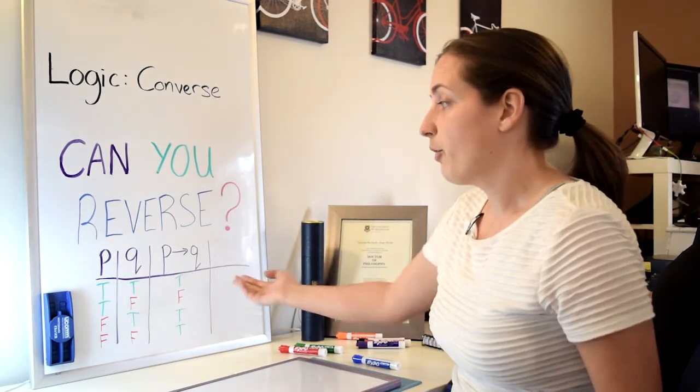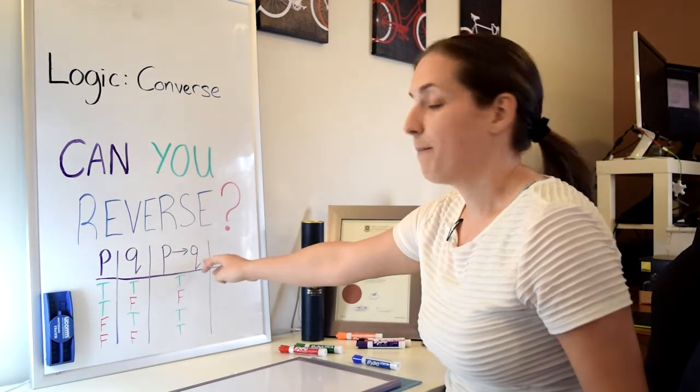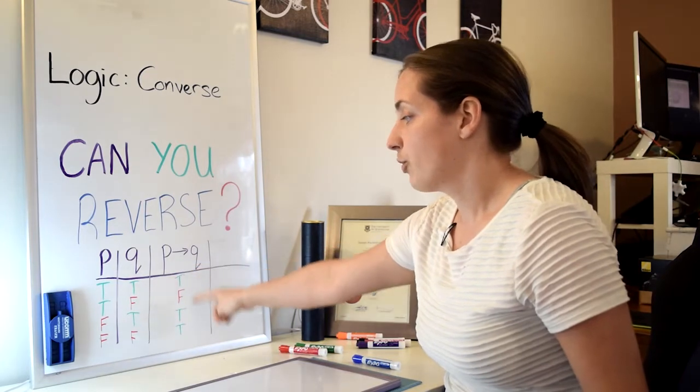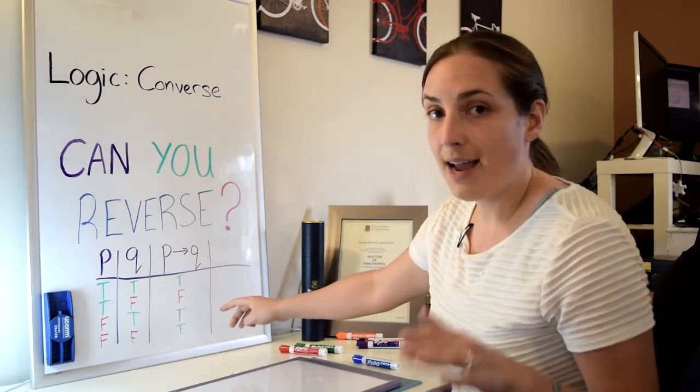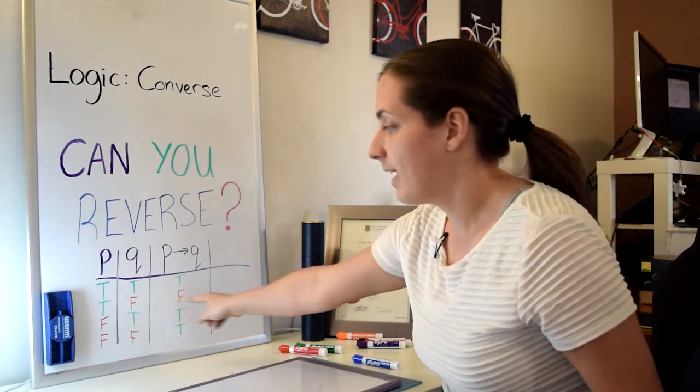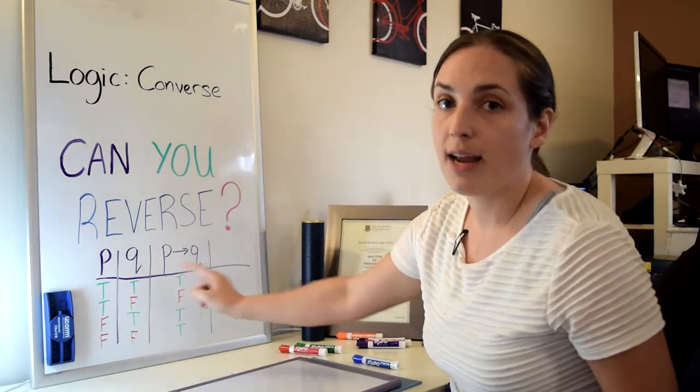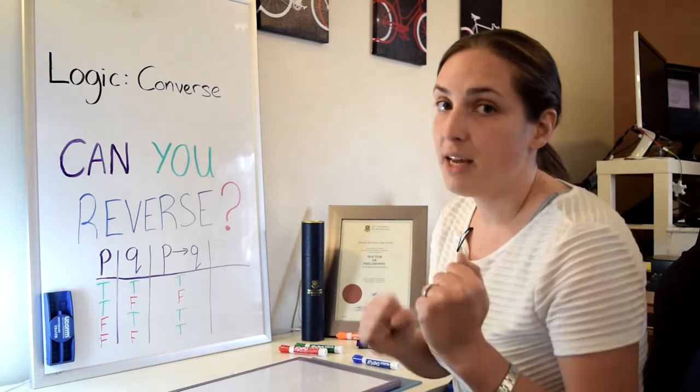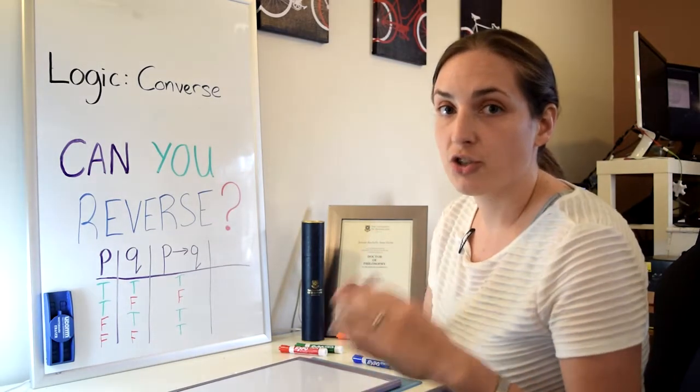Think about the if-then statement if P then Q. The truth table for if P then Q is true no matter what, as long as you're not in this one case where P is true and Q is false. If P is true and Q is false, then if P then Q is not a true statement.